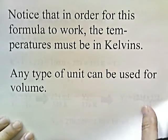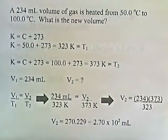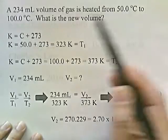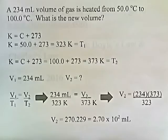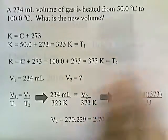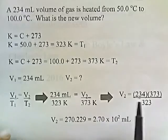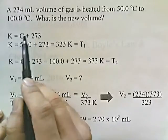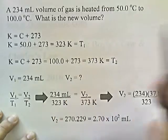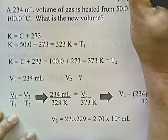Let's try a problem. A 234 milliliter volume of gas is heated from 50 degrees Celsius to 100 degrees Celsius. What's the new volume? You might be tricked into thinking that since the temperature doubles from 50 to 100 degrees Celsius, the volume will also double. But Celsius is not an accurate measure of the kinetic energy of the gas — we need to convert to Kelvin. The conversion is K equals C plus 273. So 50 plus 273 is 323 Kelvin — that's the initial temperature.